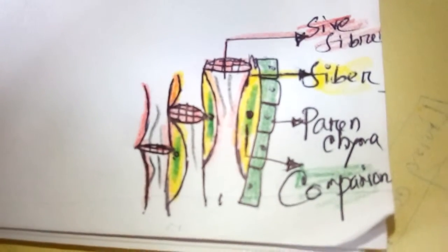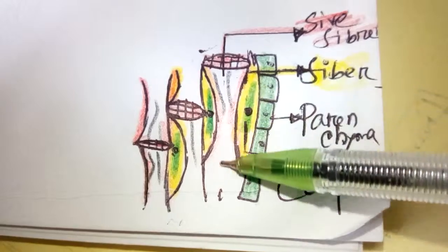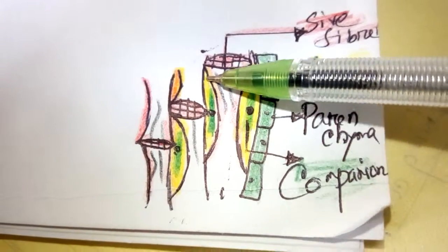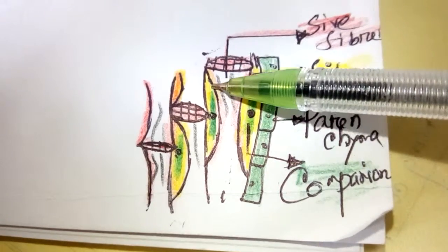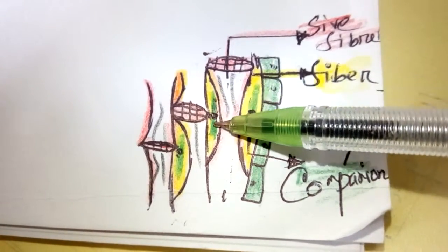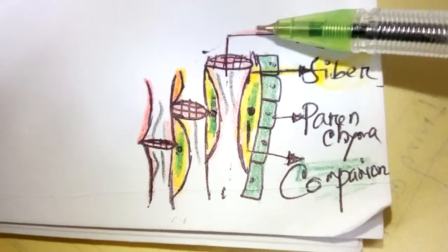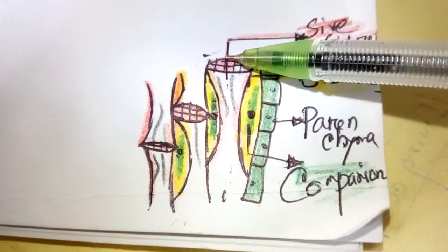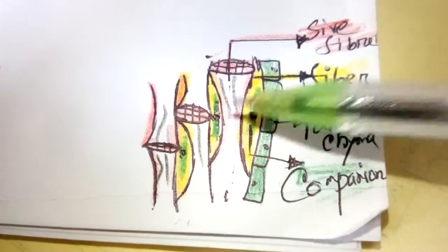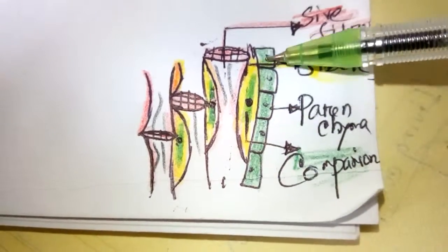This is sieve cell. And the yellow is companion cell. Sorry, the yellow is fiber cell. And in the center are present companion cells. Sieve cells lack nucleus, but companion cells present nucleus. And outside, there are present parenchyma cells.